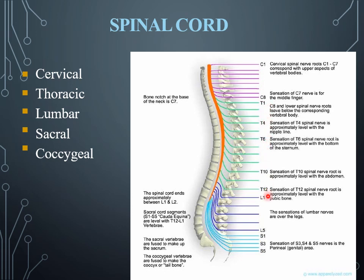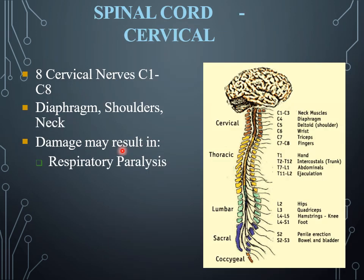The thoracic nerves run from T1 to T12. The sensation of T4 spinal nerve is approximately at the level of the nipple line, and the sensation of T6 nerve root is approximately at the level of the xiphisternum of the sternum. The eight cervical nerves from C1 to C8 cover the diaphragm, shoulder, and neck regions. Damage to these may result in respiratory paralysis.